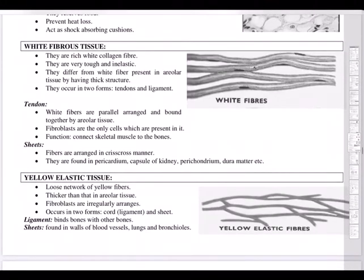Adipose tissue reserves food, prevents heat loss, and acts as a shock absorber. White fibrous tissue is made of collagen fibers — very tough and inelastic — and is present in tendons, where white fibers are arranged in parallel and bound together by areolar tissue. Its function is connecting skeletal muscles to bone. Remember: tendons connect muscle to bone, whereas ligaments connect bone to bone.